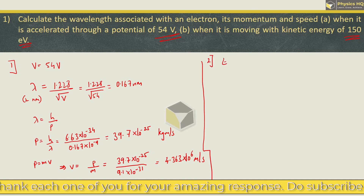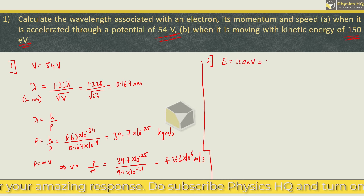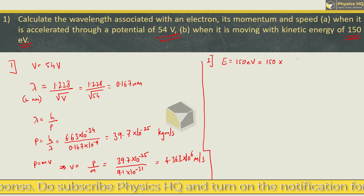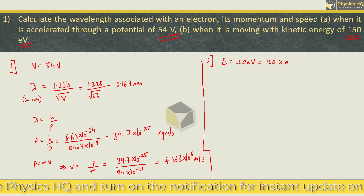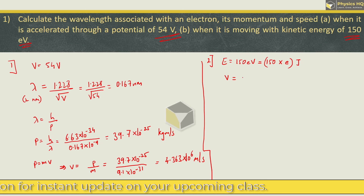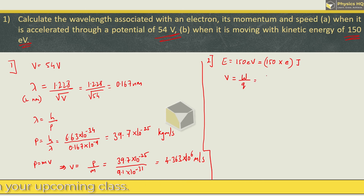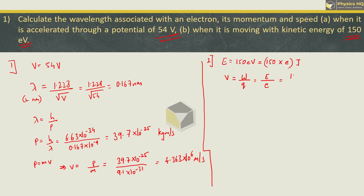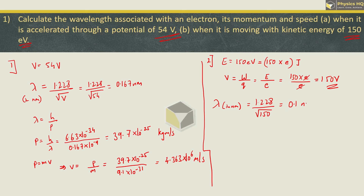In the second case, we have energy of 150 electron volts. If you convert this into joules, this will be 150 × 1.6 × 10⁻¹⁹ joules. We know that voltage or potential is work done per unit charge, and work done equals energy. Since we are talking about an electron with charge e, we get 150e divided by e, so e cancels and the potential here is 150 volts. Applying the same formula, wavelength in nanometer is 1.228 divided by root of 150, giving approximately 0.1 nanometer.